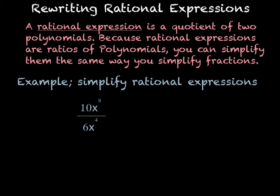Rewriting rational expressions. A rational expression is a quotient of two polynomials. Because rational expressions are ratios of two polynomials, you can simplify them the same way you would simplify any fraction.